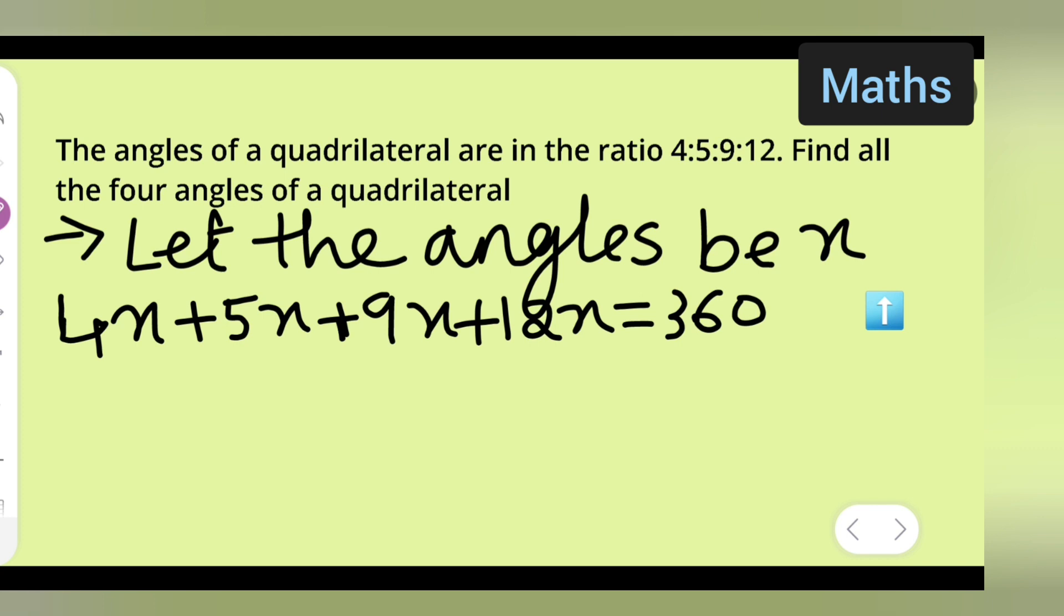equals 360. Now, what will be the reason here? Sum of quadrilateral angles, right. Next, you are going to add all this. We'll get 12 plus 9 gives 21, plus 4 gives 25, plus 5 gives 30. So this is 30x equals 360.